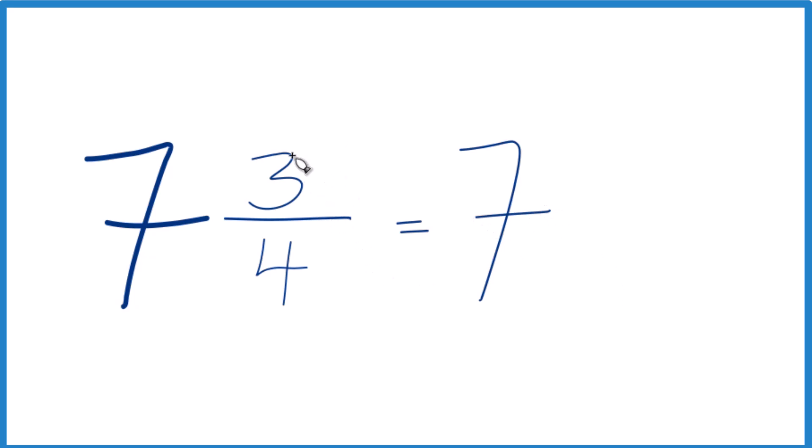The three-fourths, we need to get this to be a decimal. You might know that three-fourths is the same as 0.75. If you do, you're done because seven and three-fourths equals the decimal 7.75.